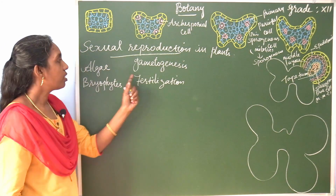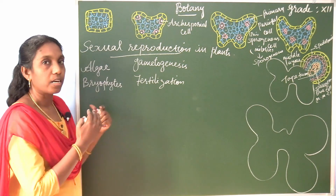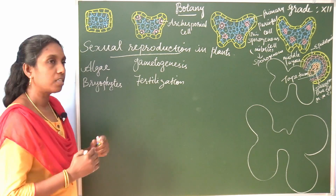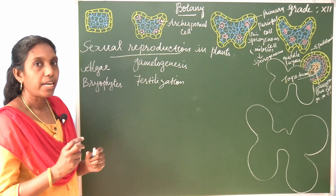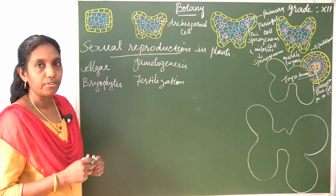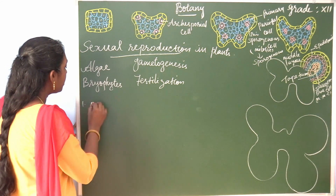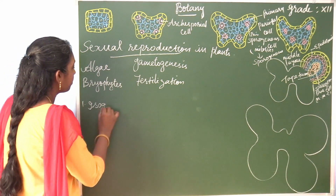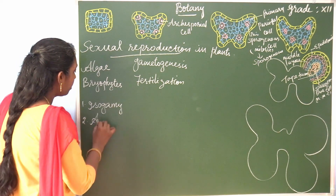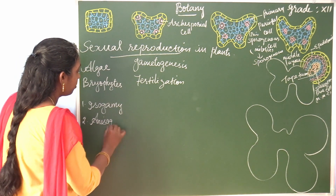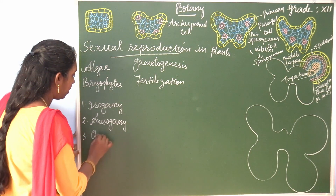Let us see how gametogenesis and reproduction take place in algae and bryophytes. There are three different stages in gametic fusion, named as isogamy, anisogamy, and oogamy.